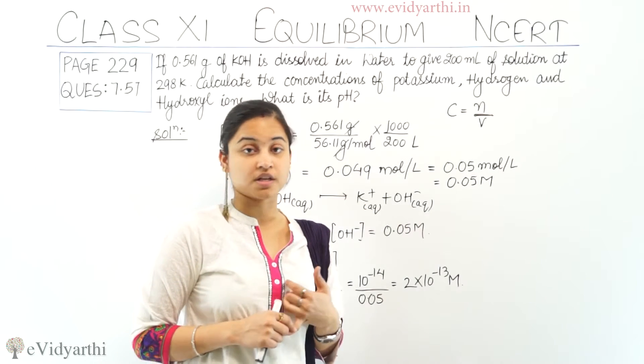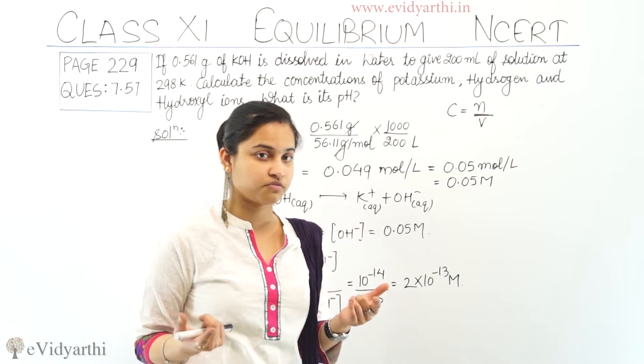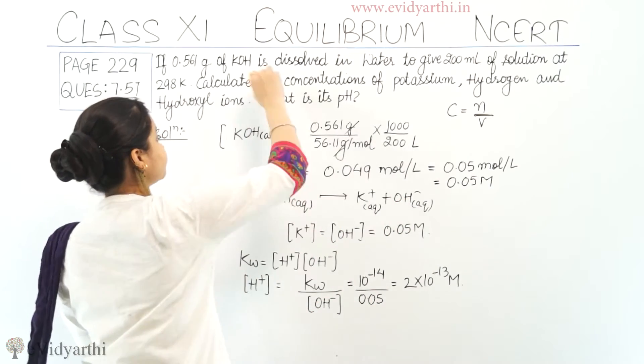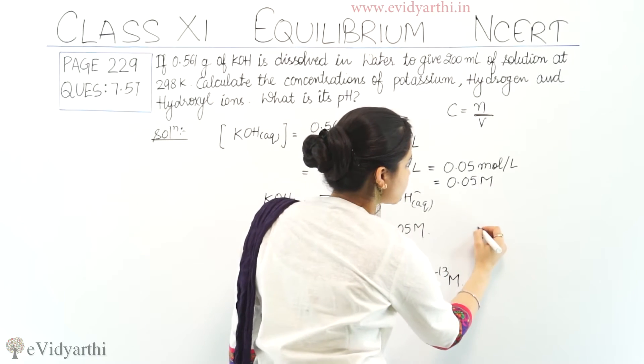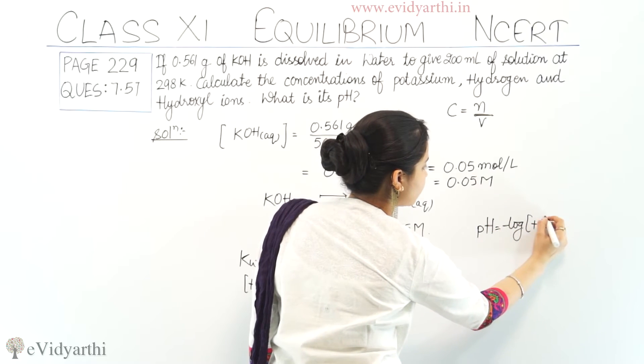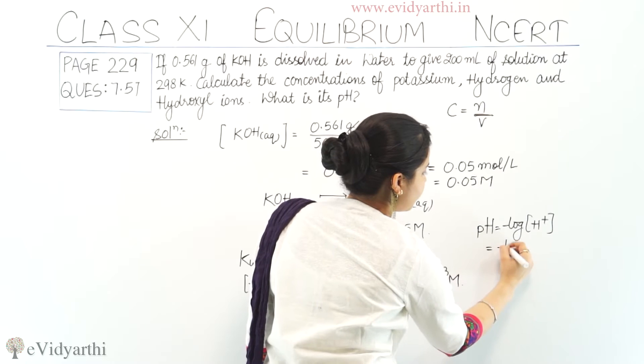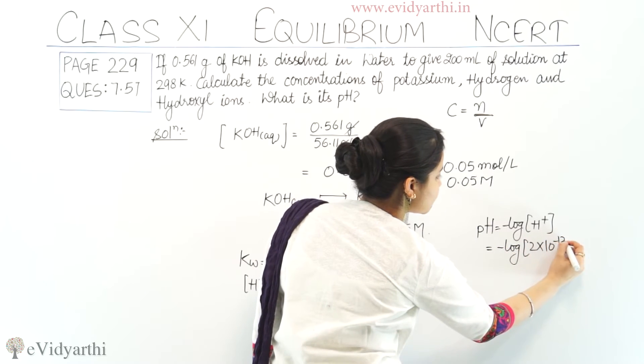Ab ab hai nikaal hai pH of the solution. pH of the solution is equals to negative log of hydrogen ion concentration. So, we will do the same. pH is equals to negative log of hydrogen ion concentration. And minus log of 2 into 10 raise to power minus 13.